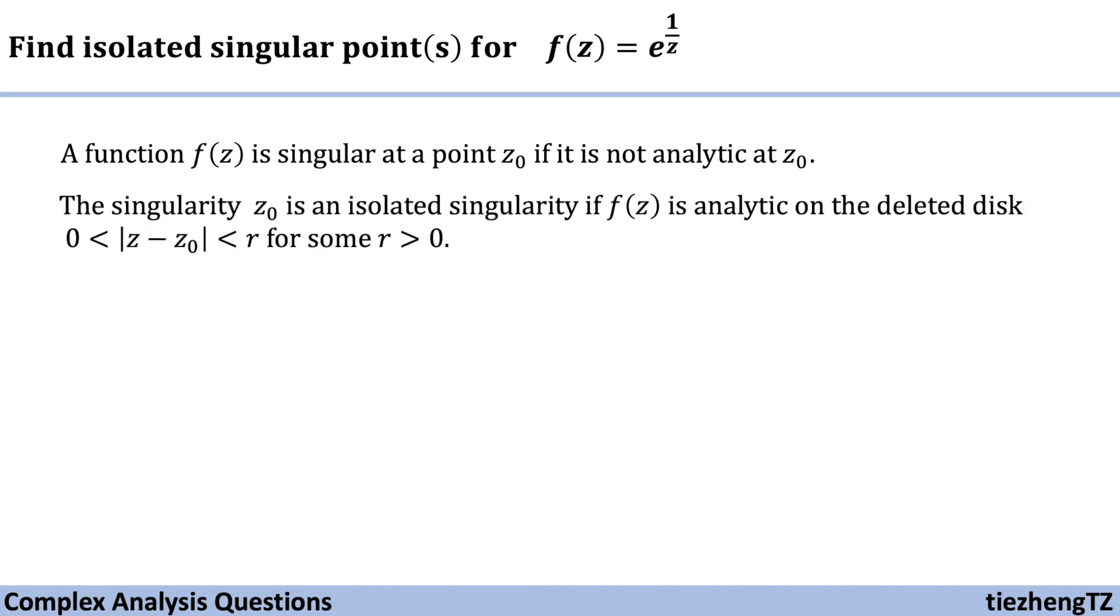And the singularity z0 is an isolated singularity if the function is analytic on the deleted disk, where |z - z0| is between 0 and r when the r value is greater than 0.